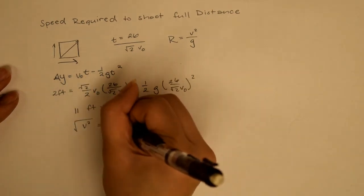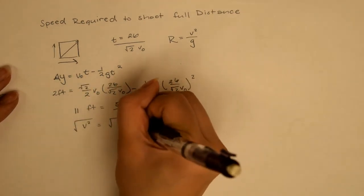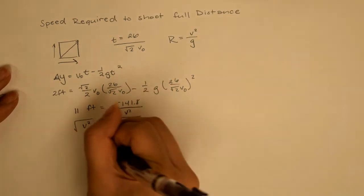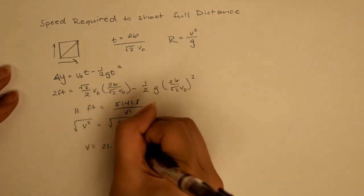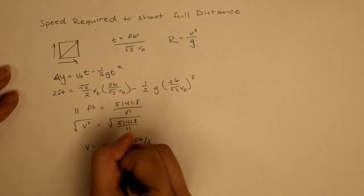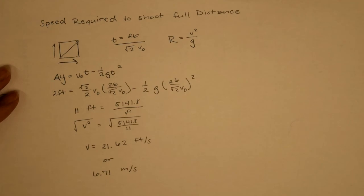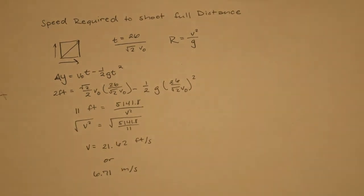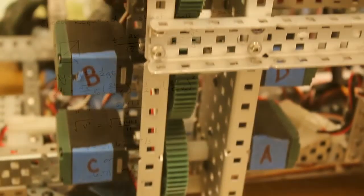We find out it's going to take about 21.62 feet per second or 6.7 meters per second in order to be able to shoot full court. Now, this isn't exactly precise because this is again not taking in air resistance or the friction that you're going to have on your own flywheel.